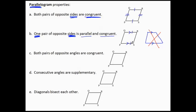Both pairs of opposite angles are congruent. Opposite angles such as P and R are the same size — notice they're both acute in this picture. Angles Q and S, opposite from each other, are congruent — notice they're both obtuse in this picture.